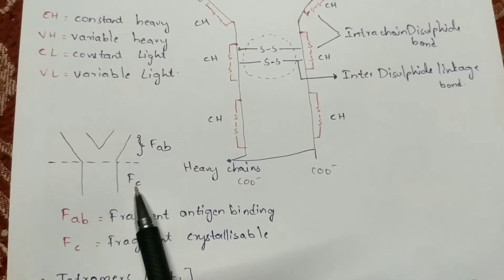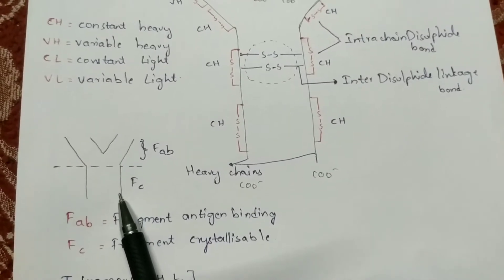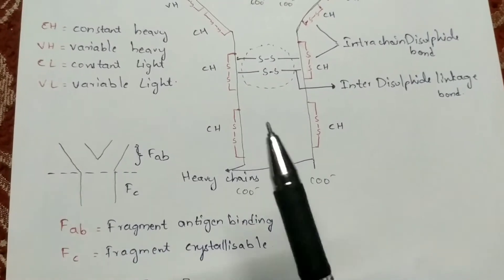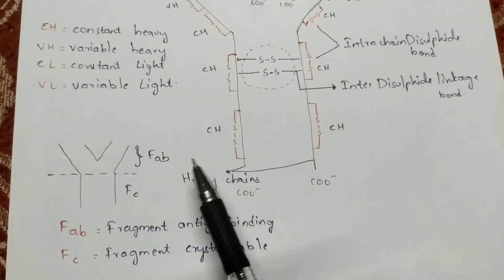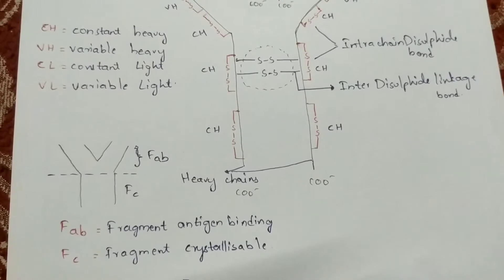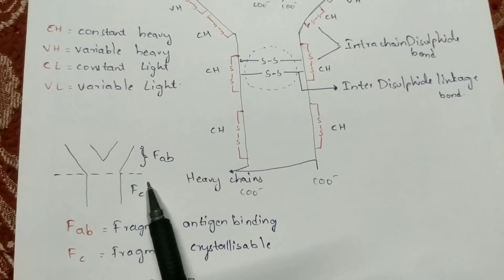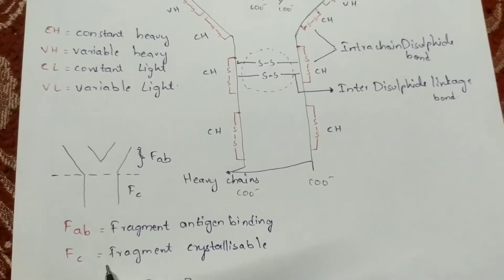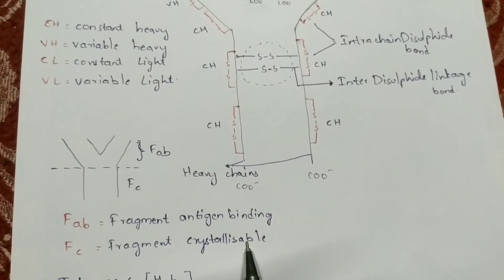The FC end is called fragment crystallizable because it is crystallized on the membrane of the plasma cell. Plasma cells produce these antibodies, and the antibodies are present at the surface of the membrane. The FC end is inserted or attached to the plasma membrane, which is why it is named fragment crystallizable — it is crystallized at the cell membrane region.